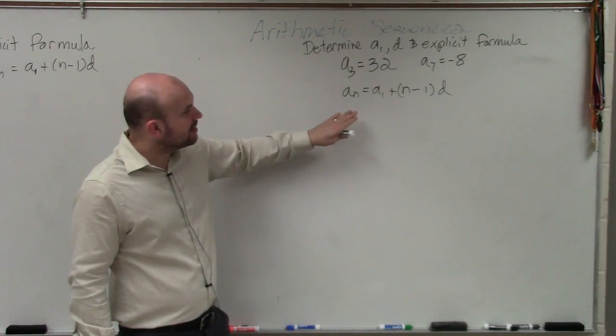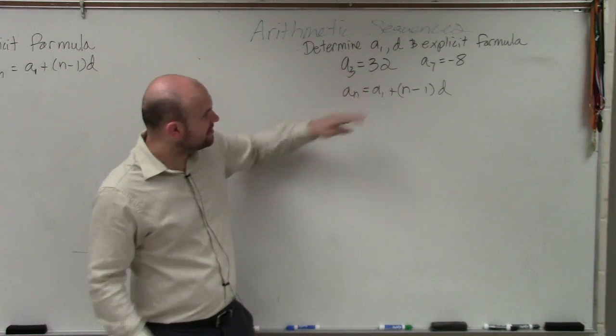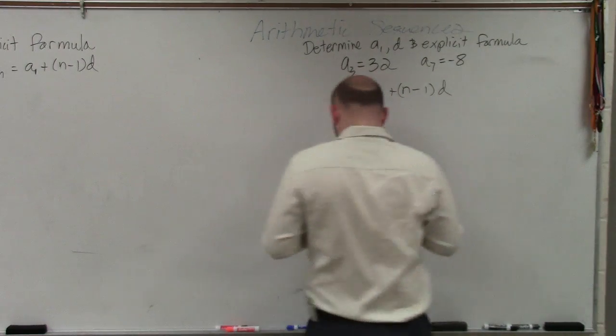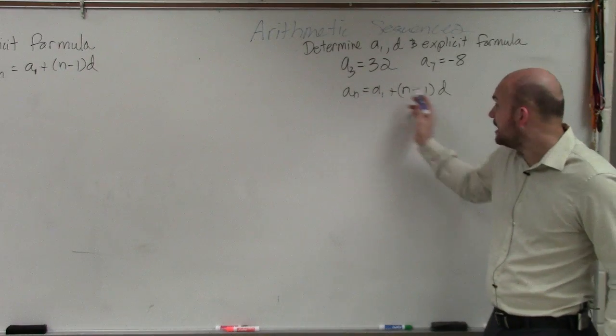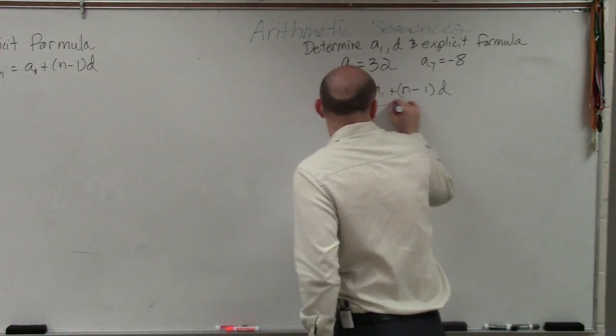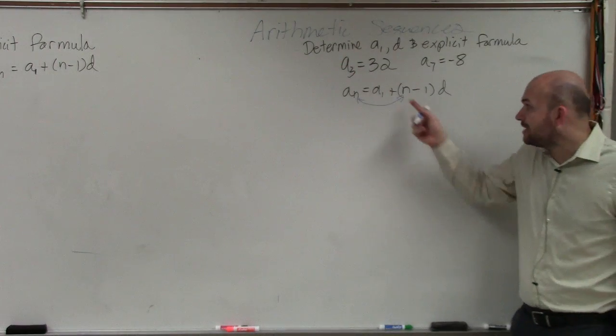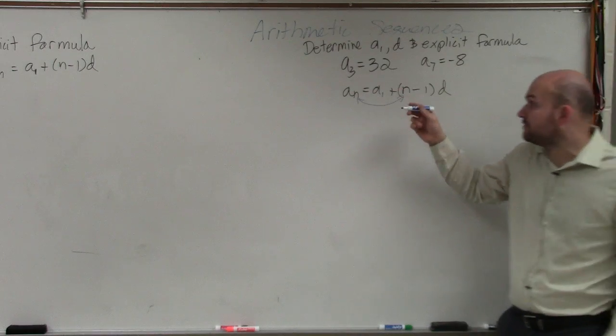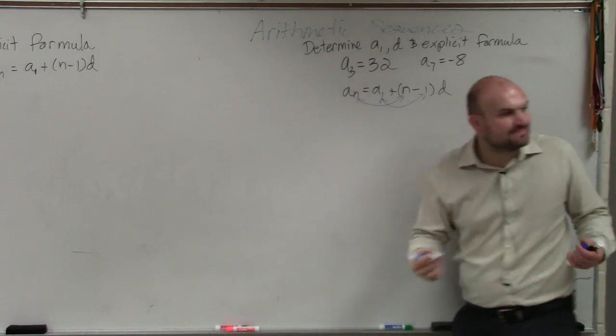The basic thing I want you guys to understand is we can represent this formula. The main important thing I want you guys to understand about this formula is I have a sub n, and then I have the n. These two n's correspond with each other. I also have a sub 1, which represents the first term. This one and that one correspond to each other.